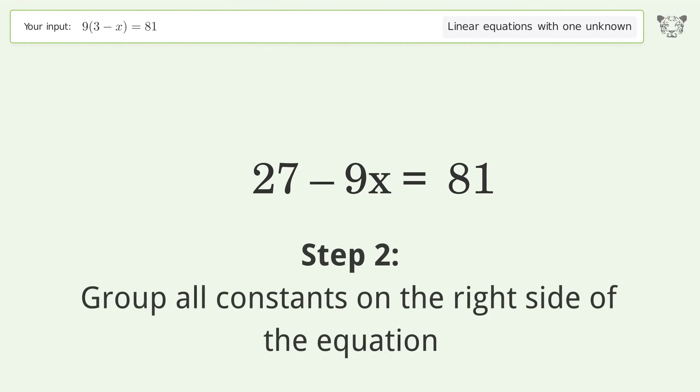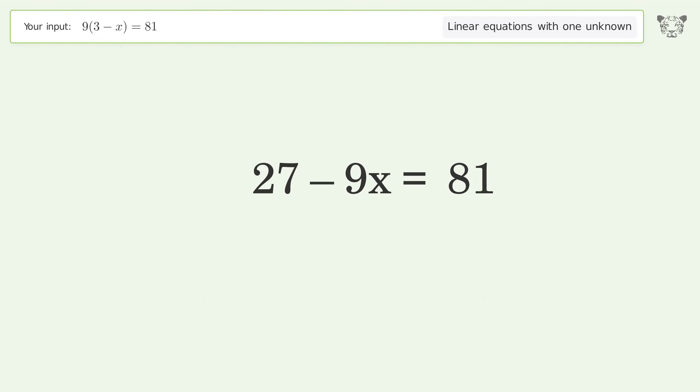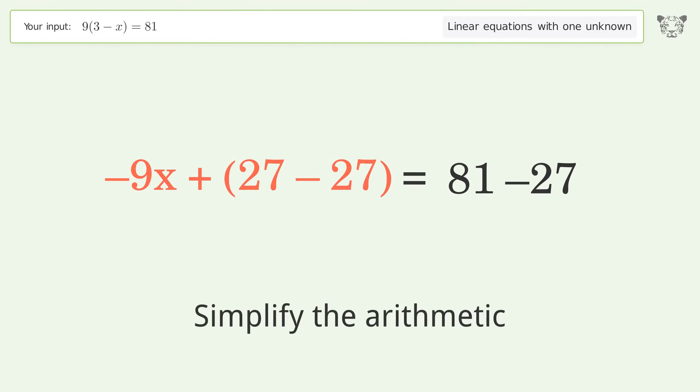Group all constants on the right side of the equation. Subtract 27 from both sides. Group like terms. Simplify the arithmetic.